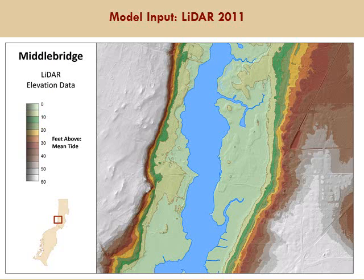Once you've got your parameters straightened out, you need input data. The most important data set is really the elevation. Those habitat distributions are based on the elevation, which drives where you are in that tidal regime and how frequently you're inundated at a given point. We're fortunate to have had LIDAR flown for the entire state in 2011 with accuracy that we can measure down to inches — this is some great detailed information.